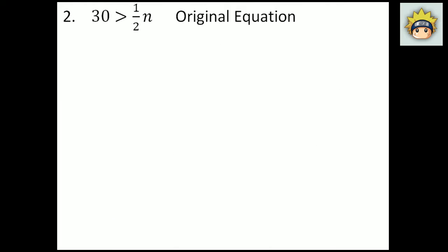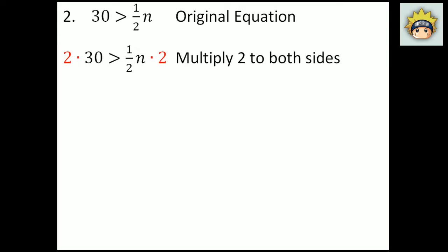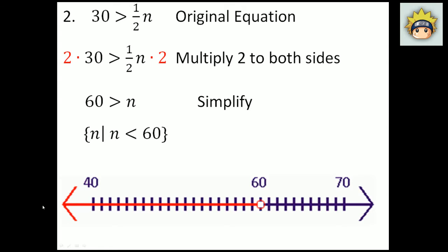Number 2. The original equation is 30 is greater than one-half n. I'm trying to get n alone, so I use the inverse property — this is 1 divided by 2, so multiply 2 to both sides. One-half times 2 on the right-hand side leaves me with n. And 2 times 30 on the left-hand side gives me 60. So 60 is greater than n. In set builder notation: n, n is less than 60. On the graph, there is an open dot on 60 and it moves to the left — so values of 59, 58 and so forth would work.